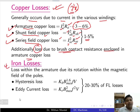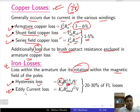The next loss is iron loss. Iron loss in the armature is due to the rotation of the core material in the magnetic field of the poles, comprising hysteresis loss and eddy current loss. Hysteresis loss is given as Kh × Bmax^1.6 × f × V, where Kh is the hysteresis constant. Eddy current loss is given as Ke × Bmax² × f² × V. If frequency, magnetic flux density, or voltage increases, the iron loss increases. Iron loss constitutes 20 to 30 percent of the full load losses.